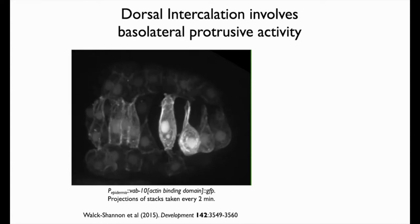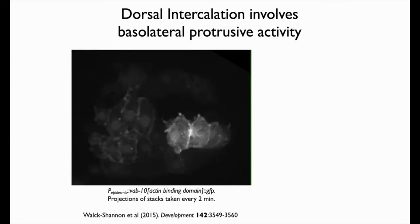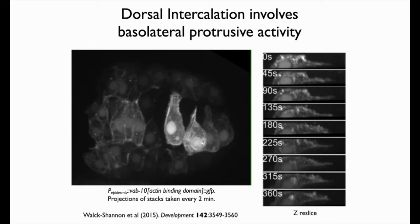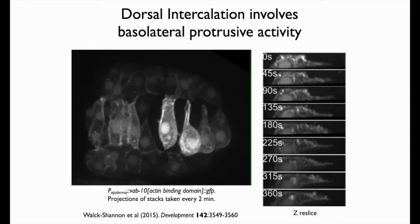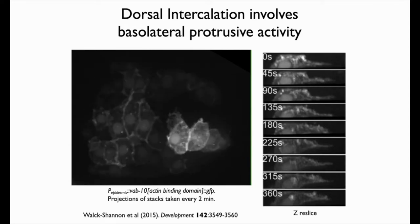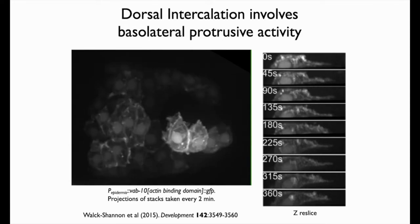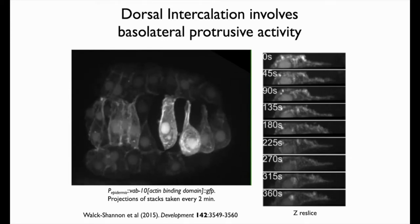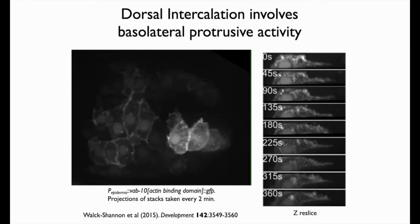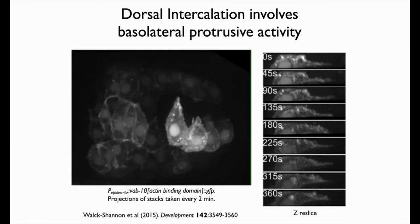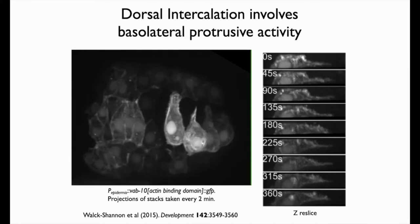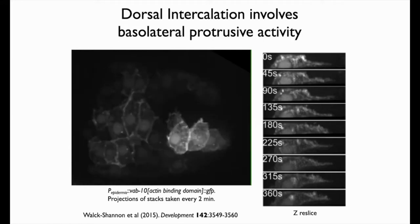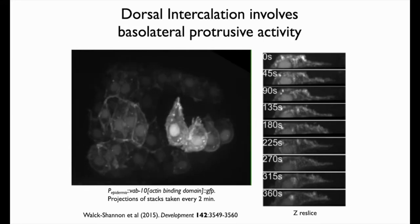Elise also made a Z reconstruction through the thickness of these cells. You can see the nucleus on the left and the cells migrating towards the right, with very thin, highly oriented protrusions as they migrate.